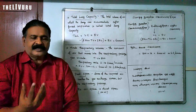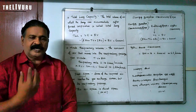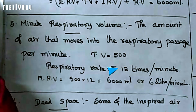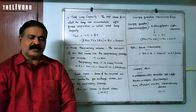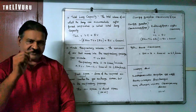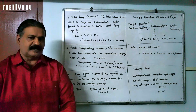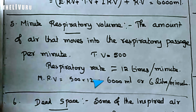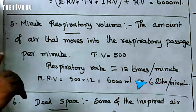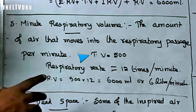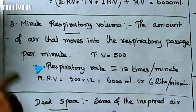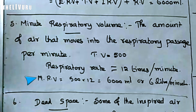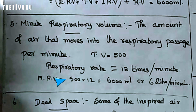Minute respiratory volume: the respiratory rate is equal to 12 times per minute, so the minute respiratory volume is equal to 500 mL times 12, which is equal to 6000 mL per minute.